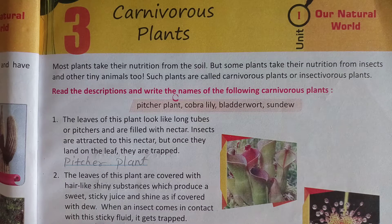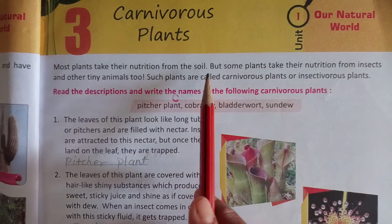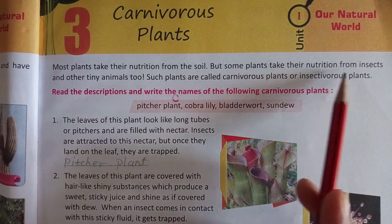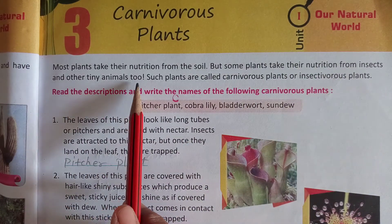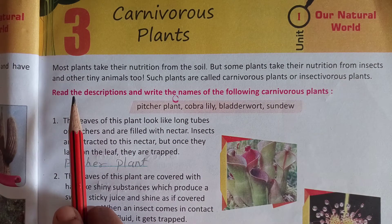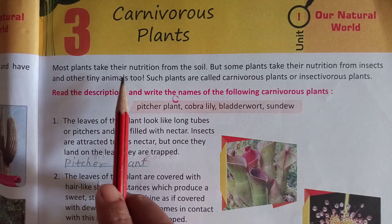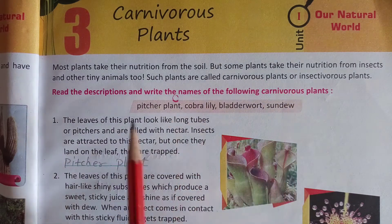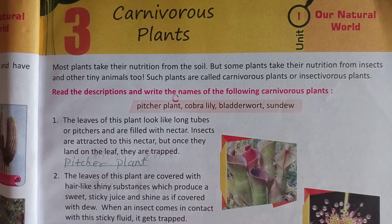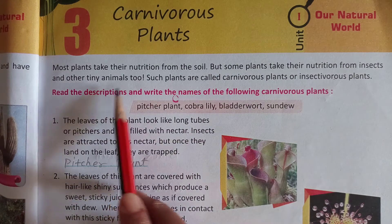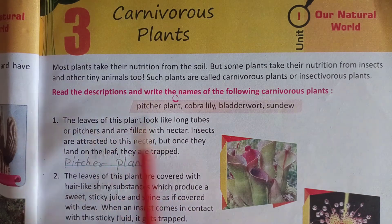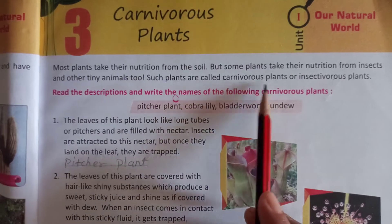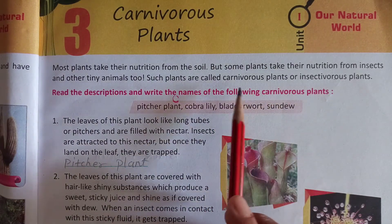Now I am going to explain carnivorous plants, means Masahari Paudhe. Most plants take their nutrition from the soil, but some plants take their nutrition from insects and other tiny animals too. Such plants are called carnivorous plants or insectivorous plants, means Masahari Paudhe.